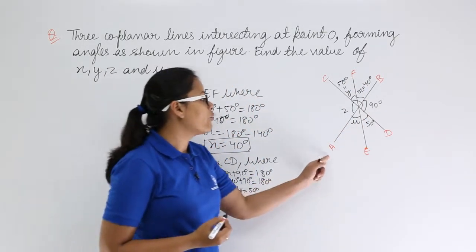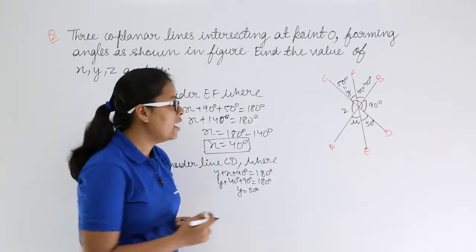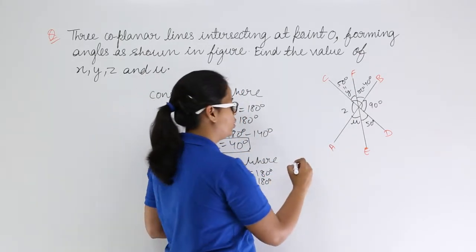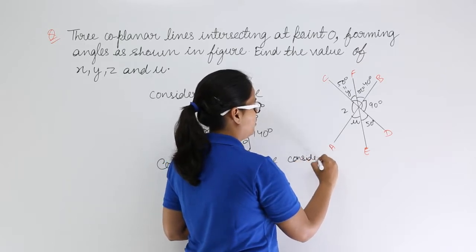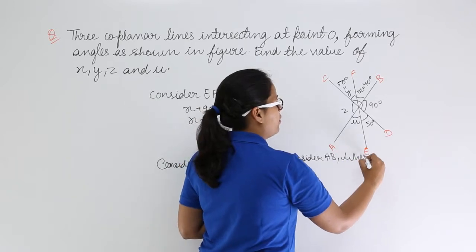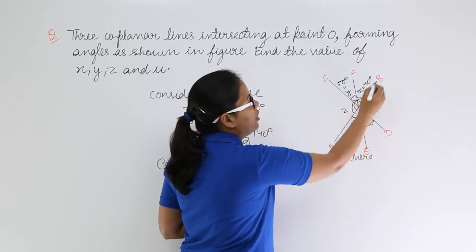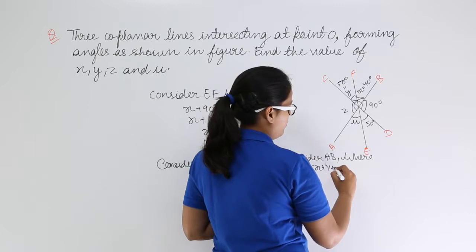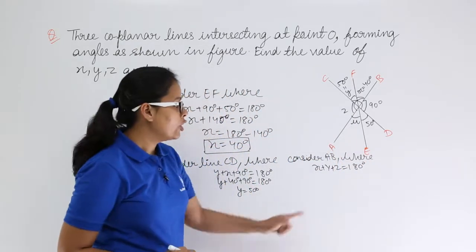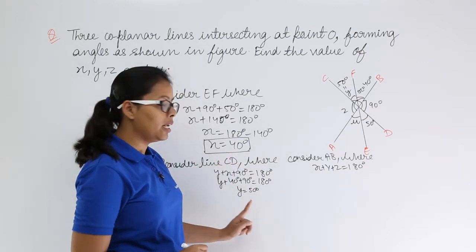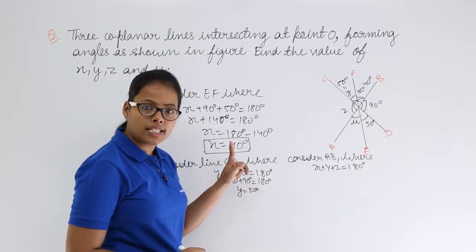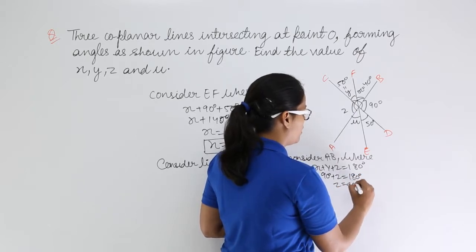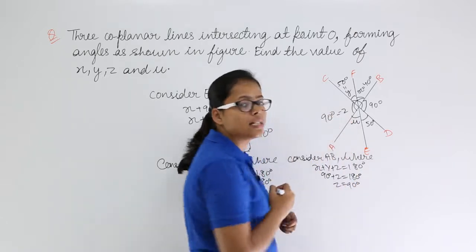Now consider line AB. On line AB, there is only one unknown parameter, z. The angles x, y, and z sum to 180 degrees. We know x = 40 and y = 50, so 40 + 50 + z = 180, giving 90 + z = 180, therefore z = 90 degrees.